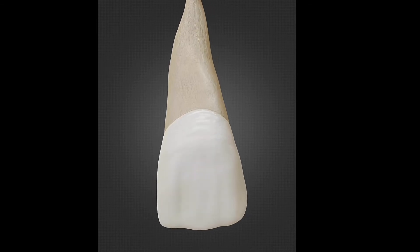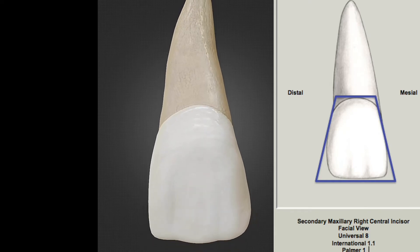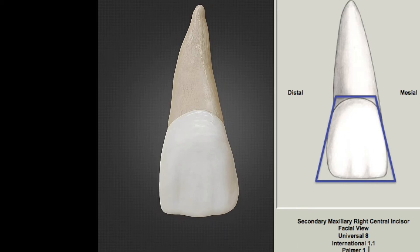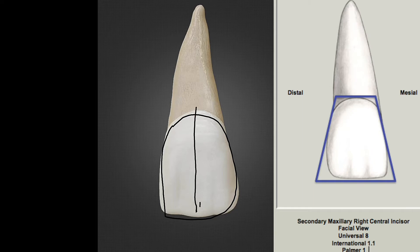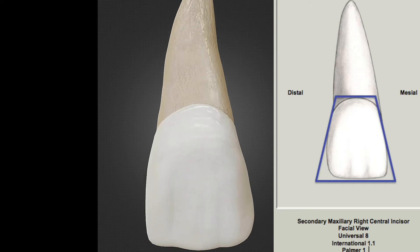Now let's study this tooth from the facial aspect, also called the labial aspect, as it lies toward the lips. The shape of the crown is roughly trapezoidal. The cervico-incisal length is greater than the mesio-distal length. It is less convex than the maxillary lateral incisor and canine.